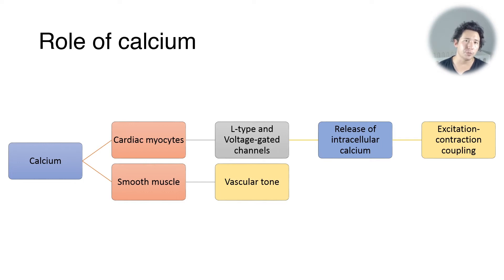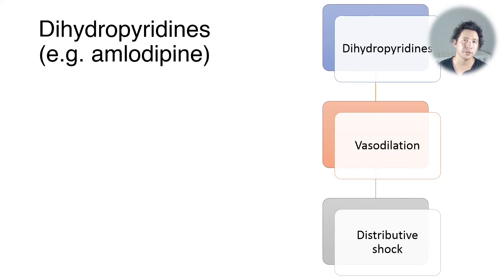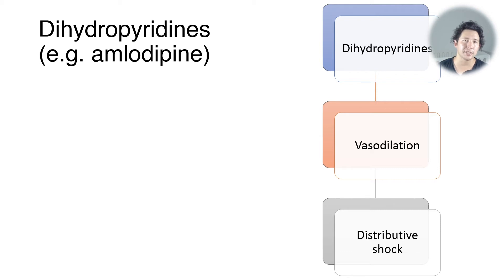In vascular smooth muscle, an influx of calcium ions is responsible for the maintenance of vascular tone. If you lose that, you're going to get hypotension through vasodilation, and that's exactly what happens when you take an overdose of something like amlodipine, which is a dihydropyridine that acts peripherally and causes vasodilation — a kind of distributive shock.